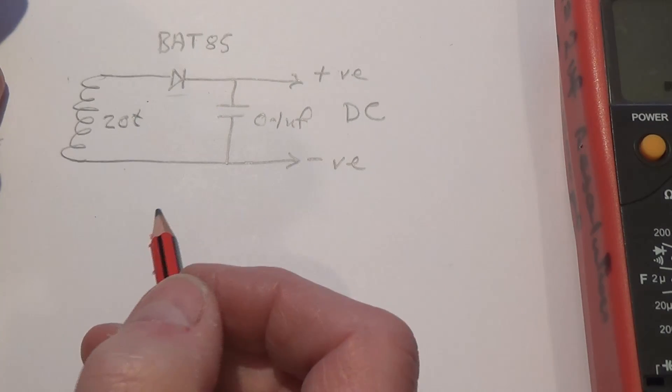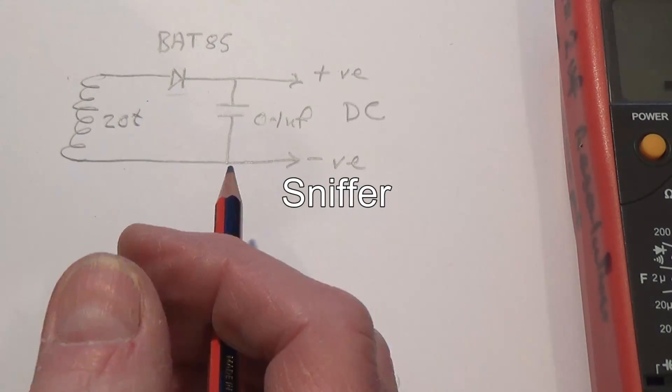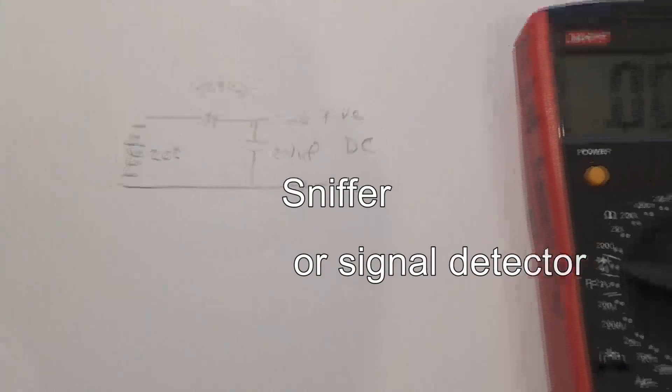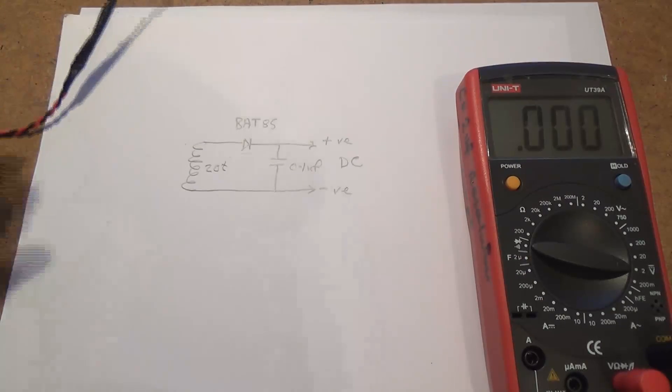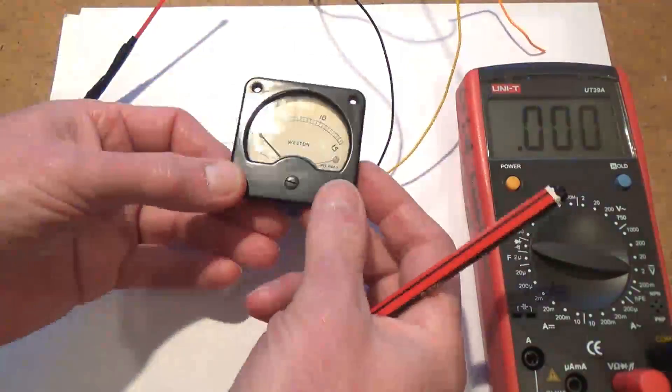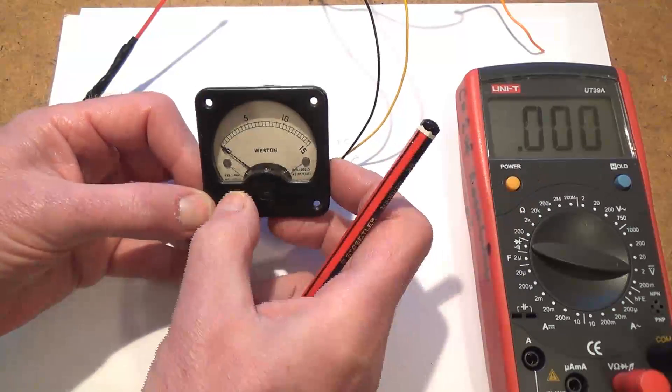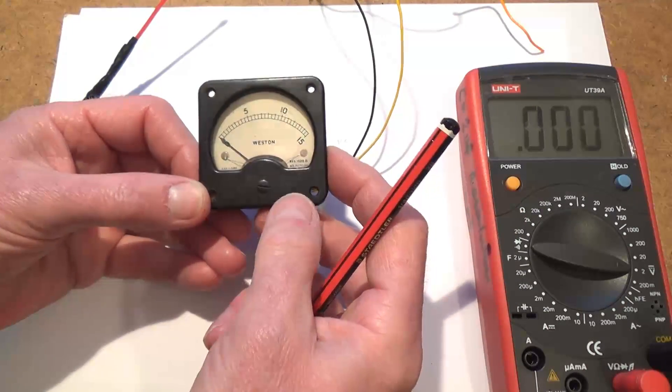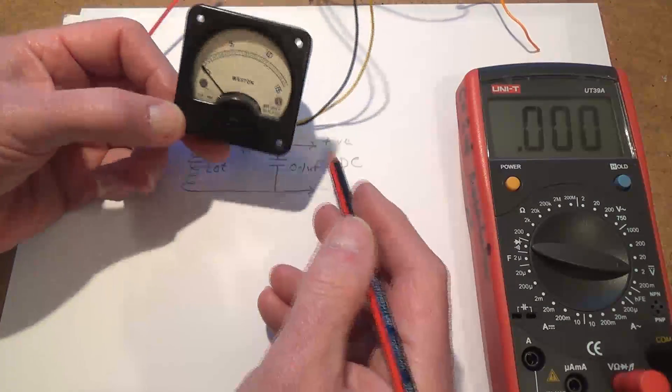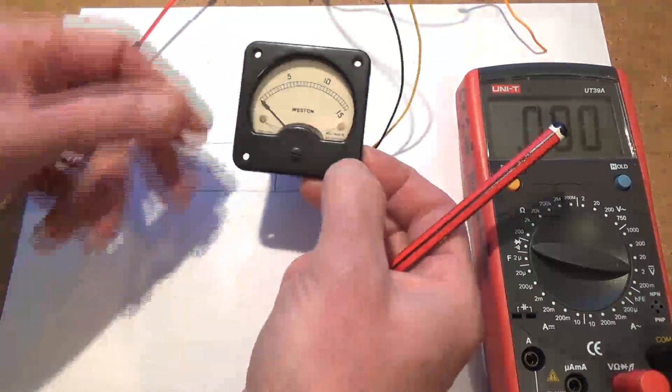As kids we used to make things like this called a sniffer or a signal detector. We used to make things like that with ex-ministry equipment. We could buy meters like this - this one's 100 microamps, but you can get a 50 microamp meter. Typically we'd put a 50 microamp meter there. It doesn't need a battery or anything, this will just detect that signal.